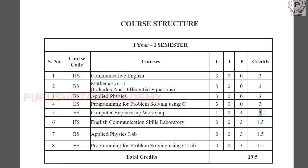Next are the Laboratories. English Communication Skills Laboratory: 3 practical points, 1.5 credits. Applied Physics Lab: 3 practical points, 1.5 credits. Programming for Problem Solving using C Lab: 3 practical points, 1.5 credits. So the total for first year first semester is 19.5 credits.